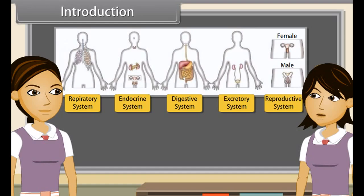We can say that each system is specialized to do a specific function, such as nutrition, digestion, respiration, transport of materials, and excretion, respectively. In each system, all the organs work together so that the whole system can work properly. In other words, all the organs of a system coordinate with each other so that the system can work properly.